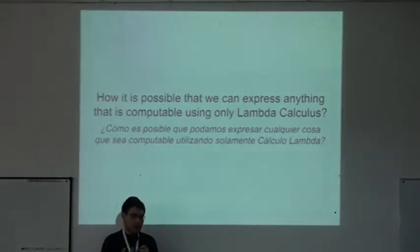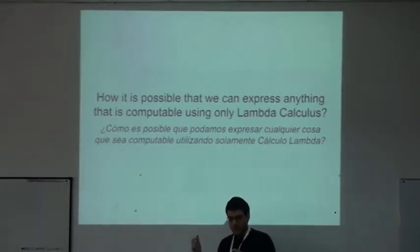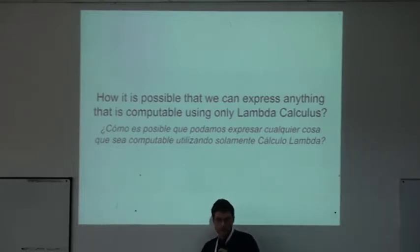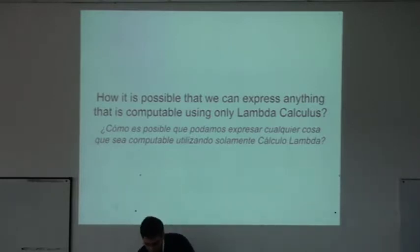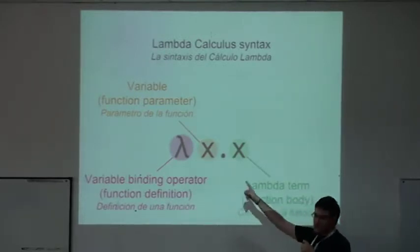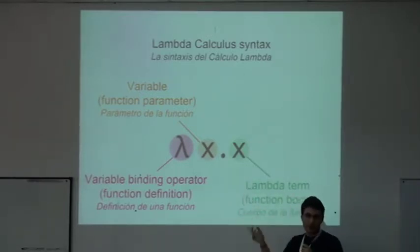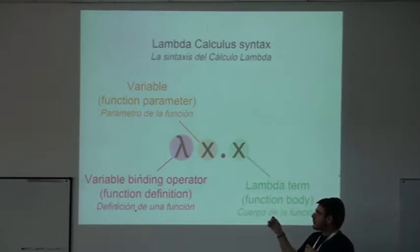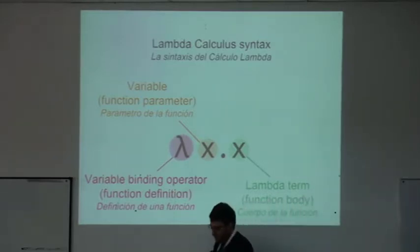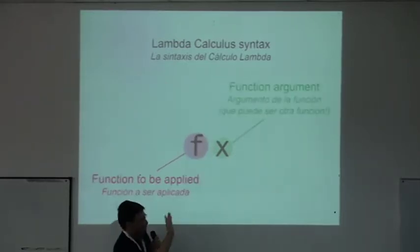We said that we can express any algorithm using Lambda Calculus. So how is it possible that we can express anything that is computable using only those simple rules? A single function definition scheme and the evaluation of those functions. It's important to know that we can only define one-argument functions — we don't have syntax to define directly a function that takes zero or two or more arguments. So it's really, really simple: we have function definition and evaluation, and nothing else.